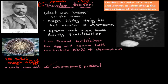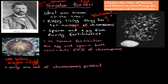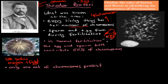Mendel died in 1884, and Boveri's work came about 15 years later. At the time in 1902, a couple of things were already known: every living thing had a set number of chromosomes — for example, humans had 46 — and sperm and egg fused during fertilization to make something called a zygote. But Boveri added to that knowledge through his experiments.